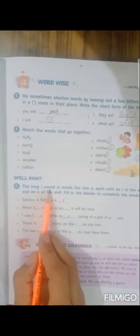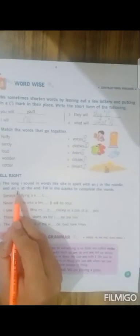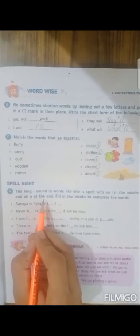The long I sound in words like sight is spelled with an I in the middle. When the long I sound of letter I comes, it comes in the middle of the word and an E at the end. When a long sound for the letter E comes, it comes at the end of the letter.